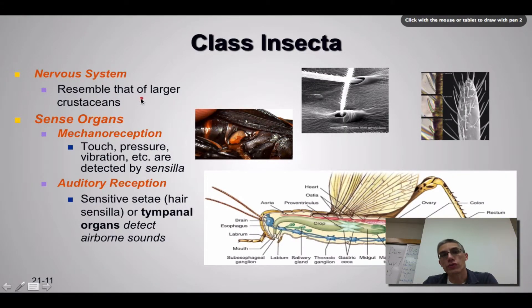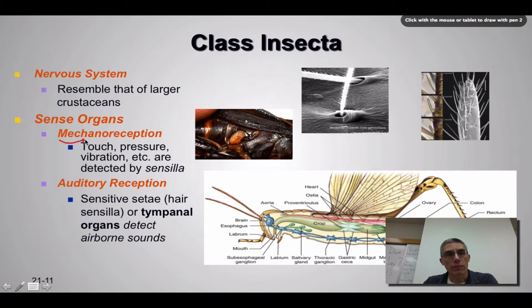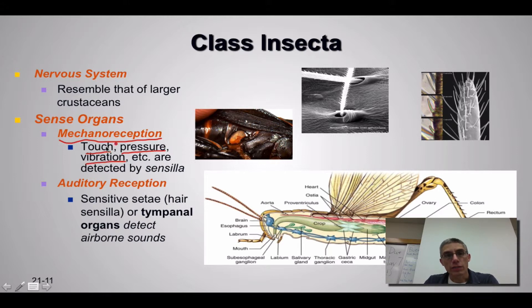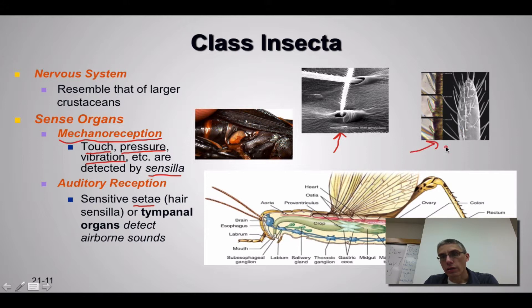The nervous system of insects resembles that of larger crustaceans from chapter 20. Sense organs vary depending on the type of insect, but they're grouped into categories. The first is mechanoreception — sense organs that respond to touch, pressure, or vibrations felt in the environment. These sensations are often detected by sensillae found on the animals, as you can see in the example here. For auditory reception, we have structures called cilia, sometimes called hair sensillae, which are used to detect airborne sounds.